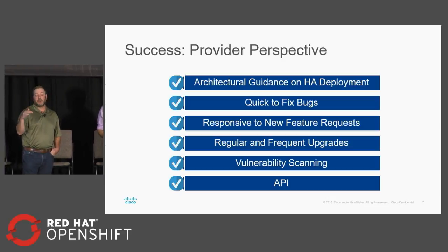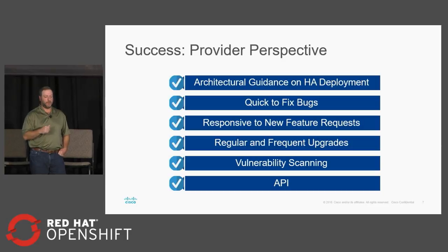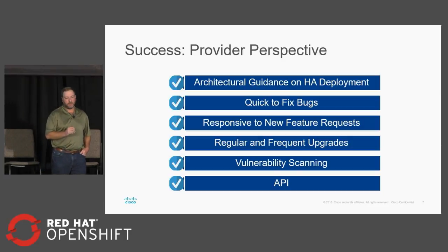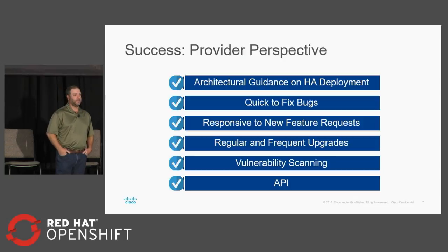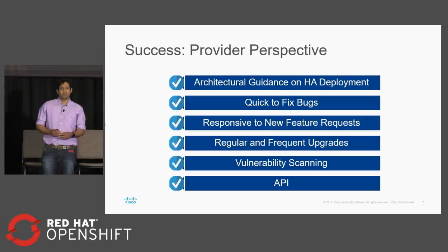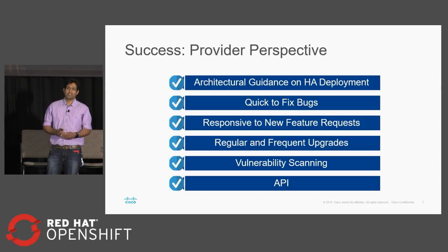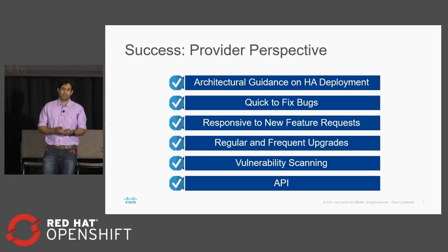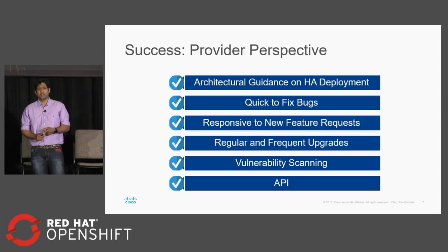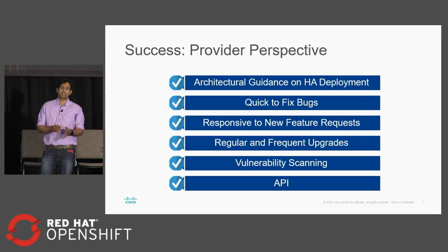These first three bullets are really important to us. We've been really pleased with the relationship with Quay and CoreOS, and I'm sure it'll continue with Red Hat. We've got a good partnership here. At Cisco, we upgrade Quay every two to three weeks because they give so many updates. The vulnerability scanning is very good — whenever we push an image, it tells us where the image is vulnerable, which layer is vulnerable, and if there's a fix available. Quay also comes with a lot of APIs that we use in our CI/CD pipeline automation.